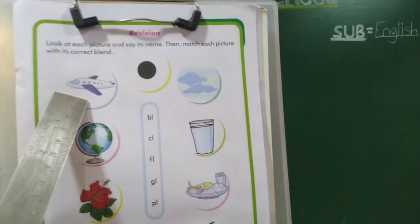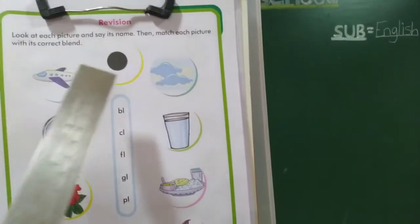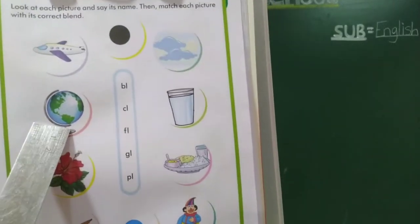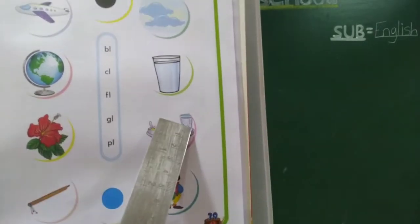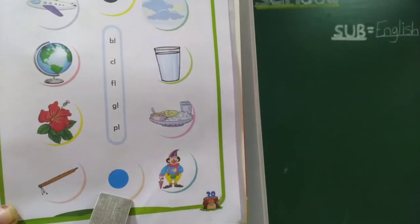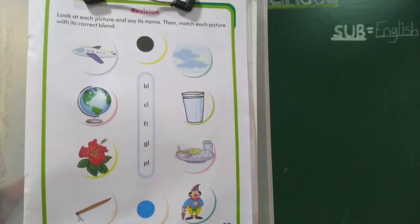This is a plane, black, cloud, globe, glass, flower, plate, flute, blue and clone.